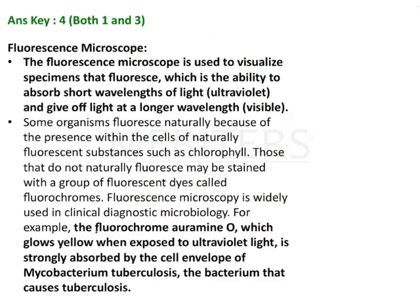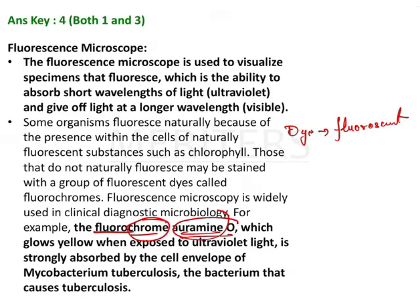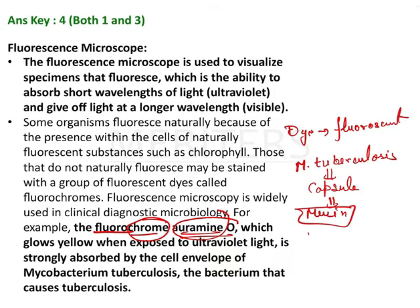We will now look at a fluorochrome called Auramine O. There is a fluorescent dye — these fluorochromes give a color, and that is called Auramine O. Another dye is also known as Rhodamine. These dyes have very good affinity with the capsule of Mycobacterium tuberculosis. There is a bacterium known as M. tuberculosis which has good affinity for Auramine O and Rhodamine. Basically, there is a capsule over M. tuberculosis that is made up of mycin, and this mycin has very high affinity for Auramine O, which is a fluorescent dye.